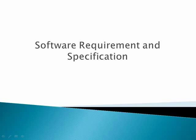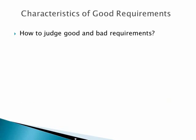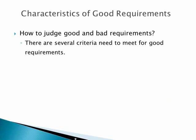What are the key parameters? There are a number of parameters that need to be fulfilled for declaring requirements to be good. But usually these parameters are ignored and overlooked during the requirement engineering process. There are several criteria needed for good requirements — we have some criteria or parameters by which we can judge whether a requirement is good or bad.